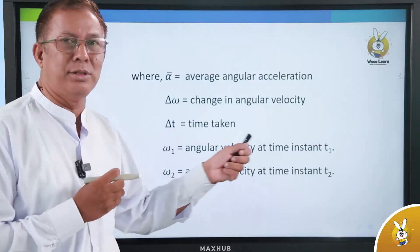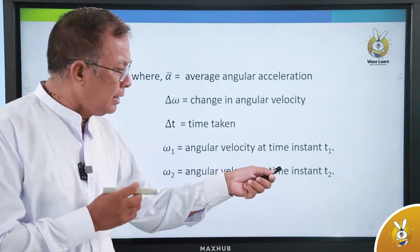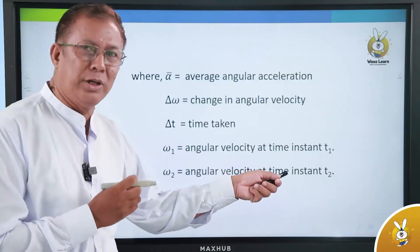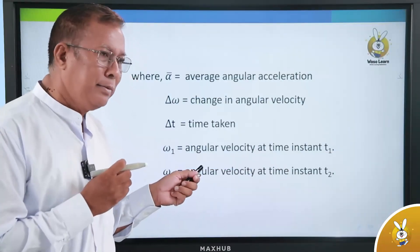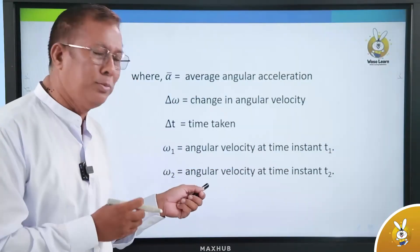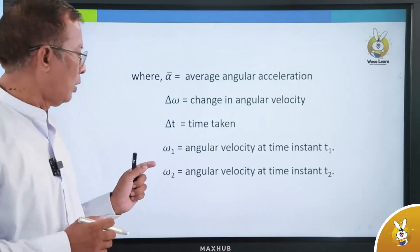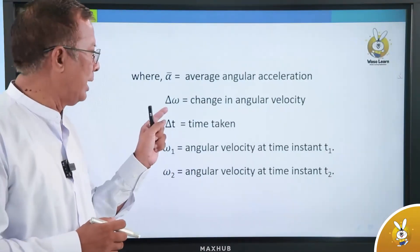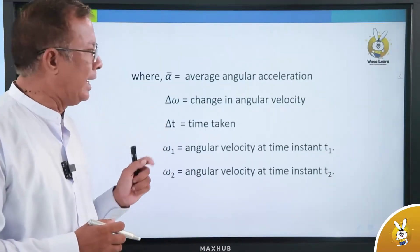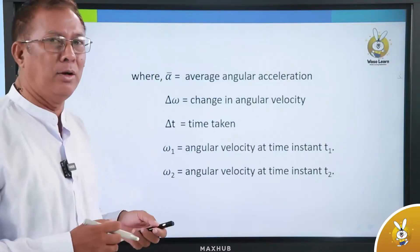The angular velocity omega 1 is at the first instant, and omega 2 is the angular velocity at the second instant, T2. The average angular acceleration alpha equals omega 2 minus omega 1 divided by T2 minus T1.